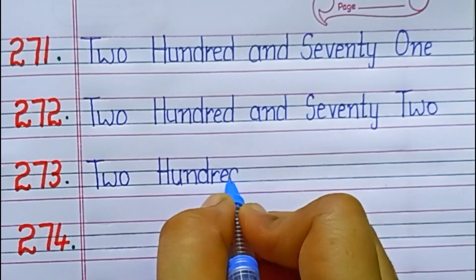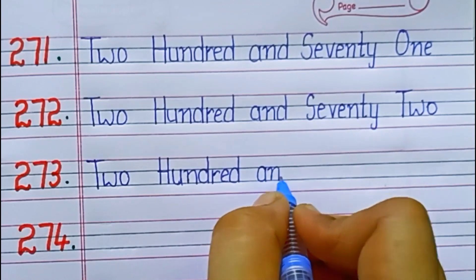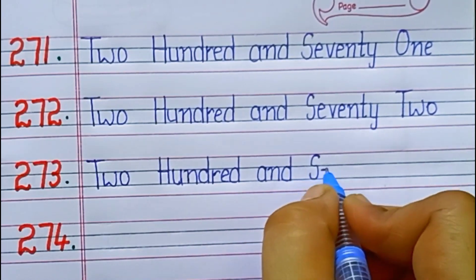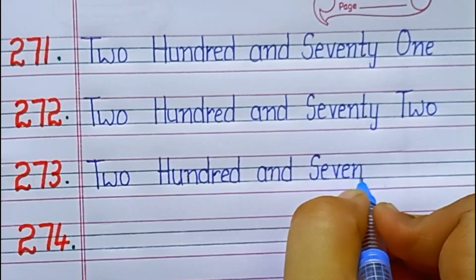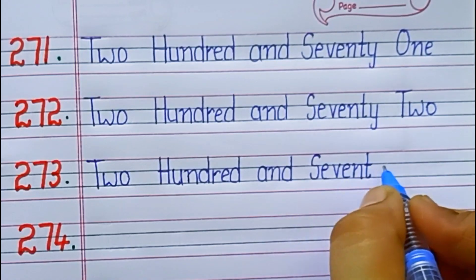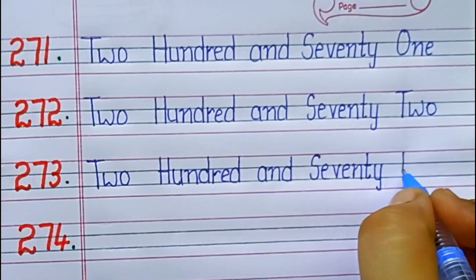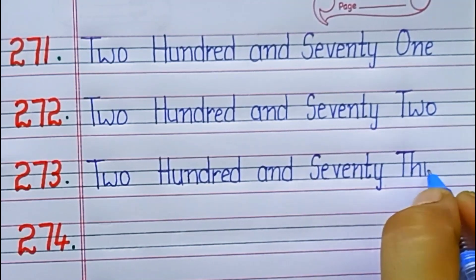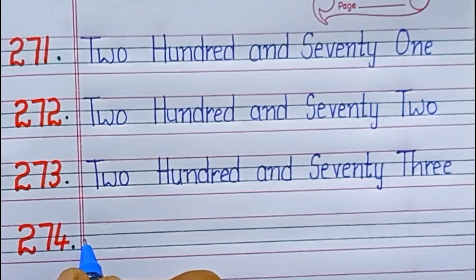273. S-E-V-E-N-T-Y, 70. T-H-R-E-E, 3. 73. Two hundred seventy-three.